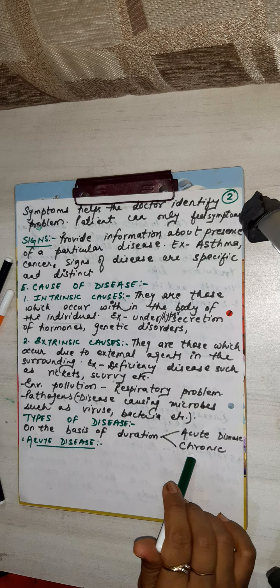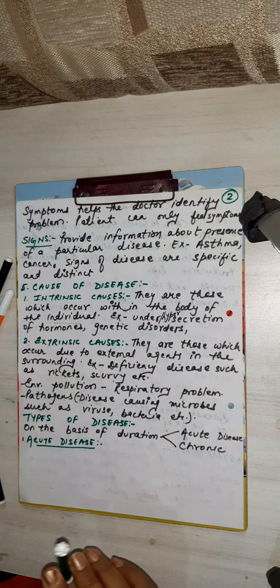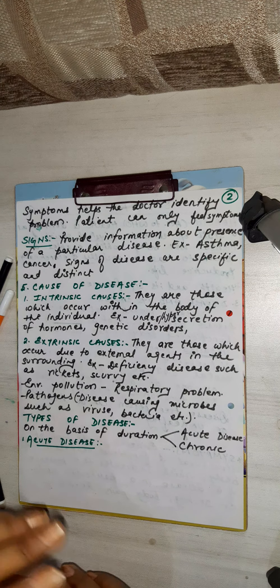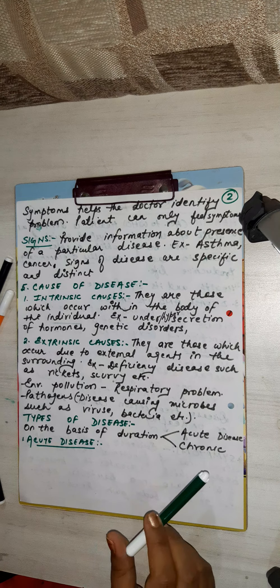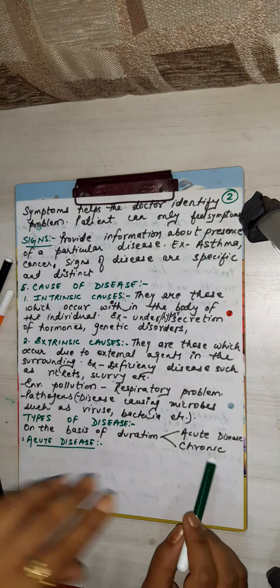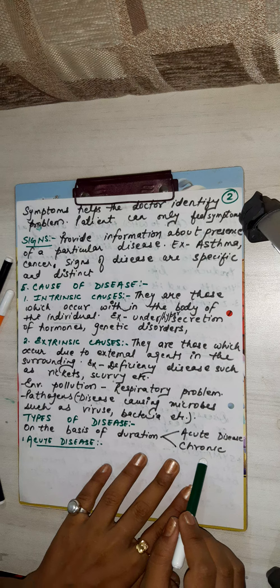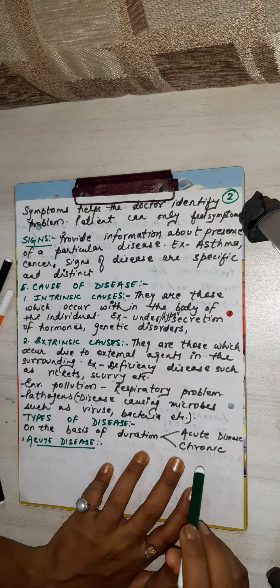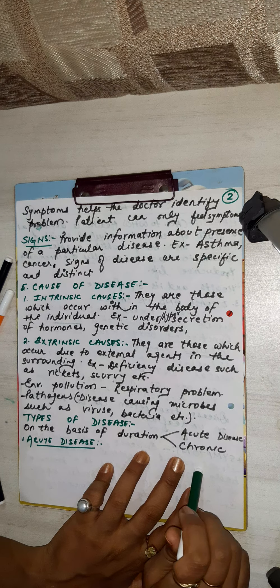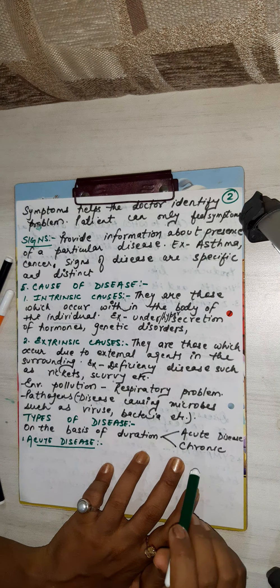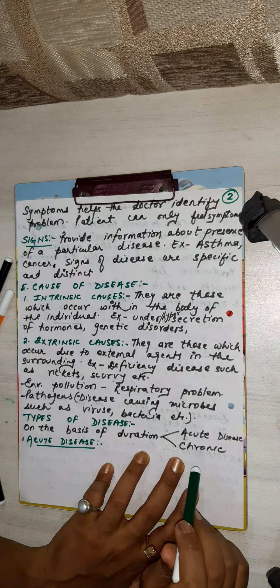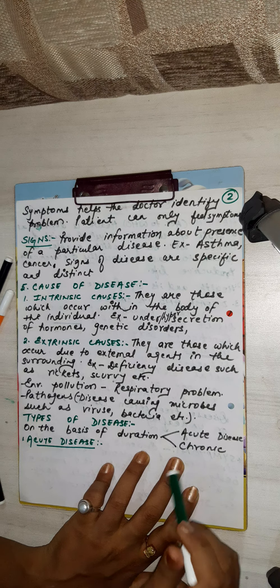And chronic — what is chronic? Long duration. For example, hypertension is long duration. Polio is long duration. TB is long duration. Diabetes is also long duration.